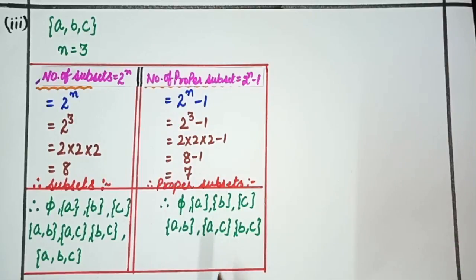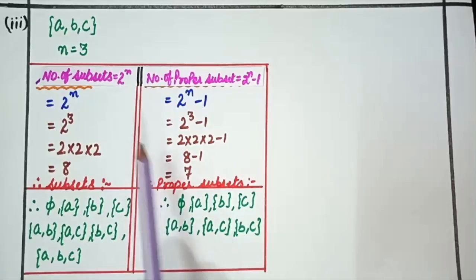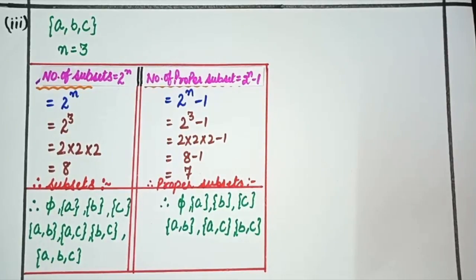So today we have learned how to find all possible subsets and proper subsets from a given set by applying these two formulas. I hope all of you are able to do the related homework sent in your Snap Homework. Before starting your homework, please go through the YouTube links, as they are very helpful. Thank you.